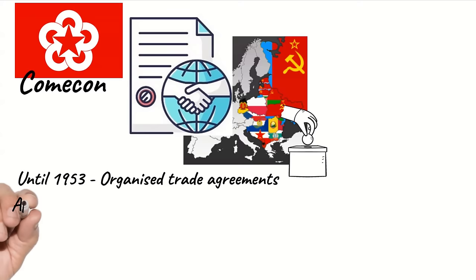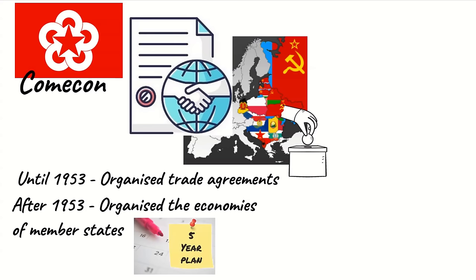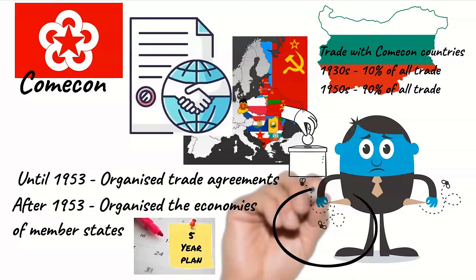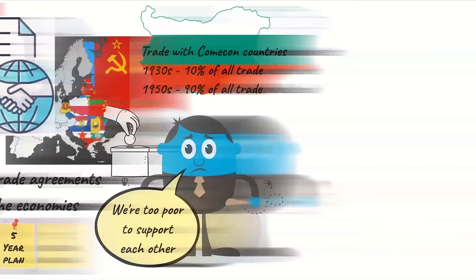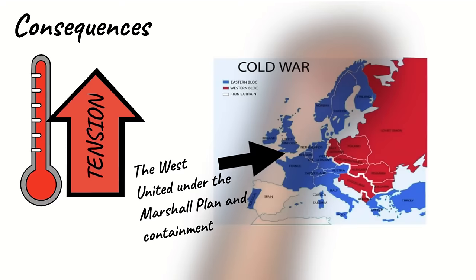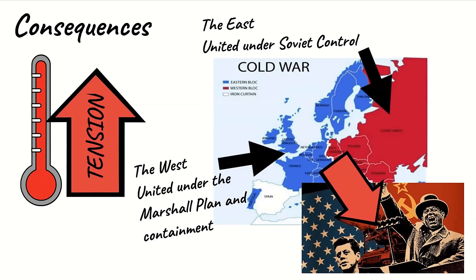At first the committee spent their time organising credit and trade agreements, but after 1953 it began to organise the economies of member states, giving each a financial five-year plan in favour of trade with Comecon. For example, Bulgaria's trade with other Comecon countries increased from 10% of its overall trade in the 1930s to over 90% in the 1950s. In reality though, the Soviet countries did not have enough money to support one another. The consequences were clear: it dramatically increased tension between the two sides because Western Europe was now united, tied to the US by the Marshall Plan and the policy of containment, while the East was also united but under Soviet control. These spheres of influence drew the battle lines for the Cold War.